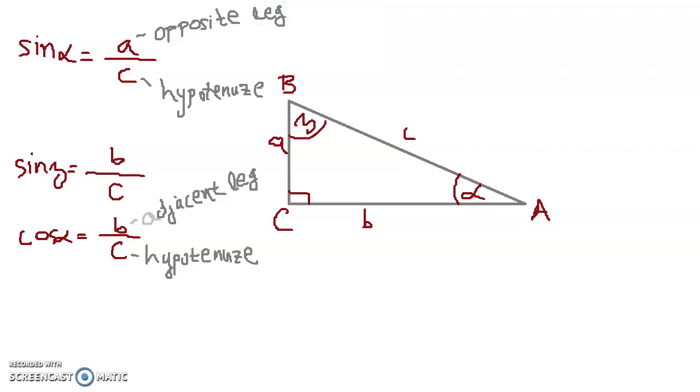And don't forget angle beta. So cosine beta, adjacent for beta is A over hypotenuse, which is C.